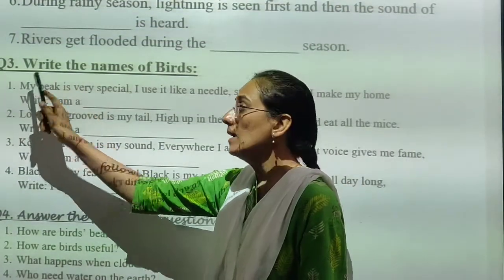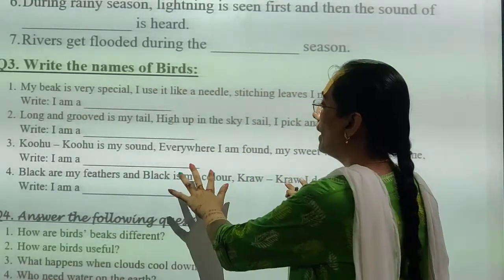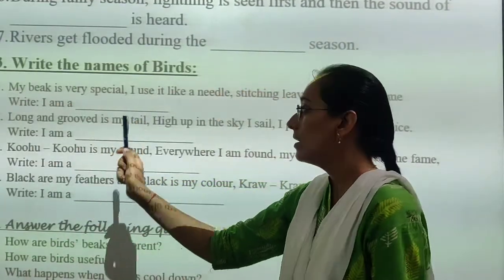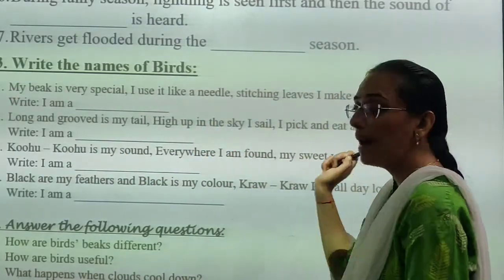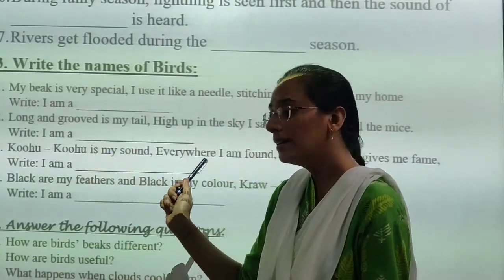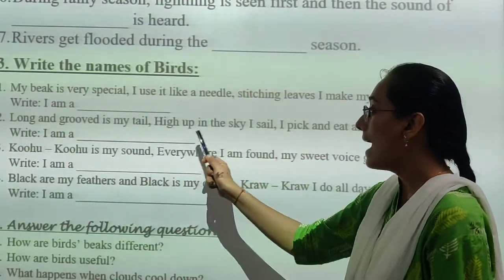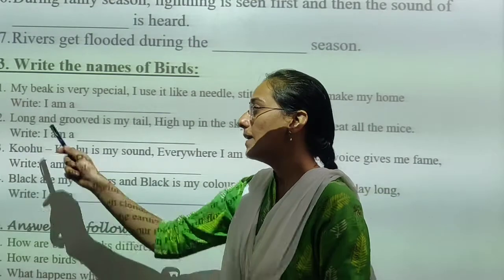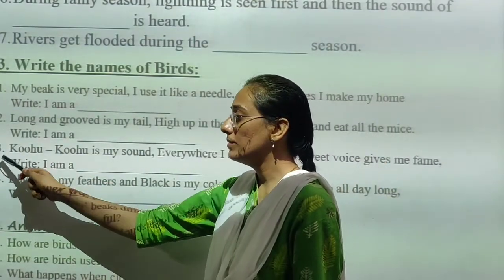Now section three: write the names of the birds. First riddle: my beak is very special, I use it like a needle — stitching leaves, I make my nest. I am a... Second riddle: long and curved is my beak, higher in the sky I soar. I pick and eat all the mice. I am a... Which bird? You have to write yourself.